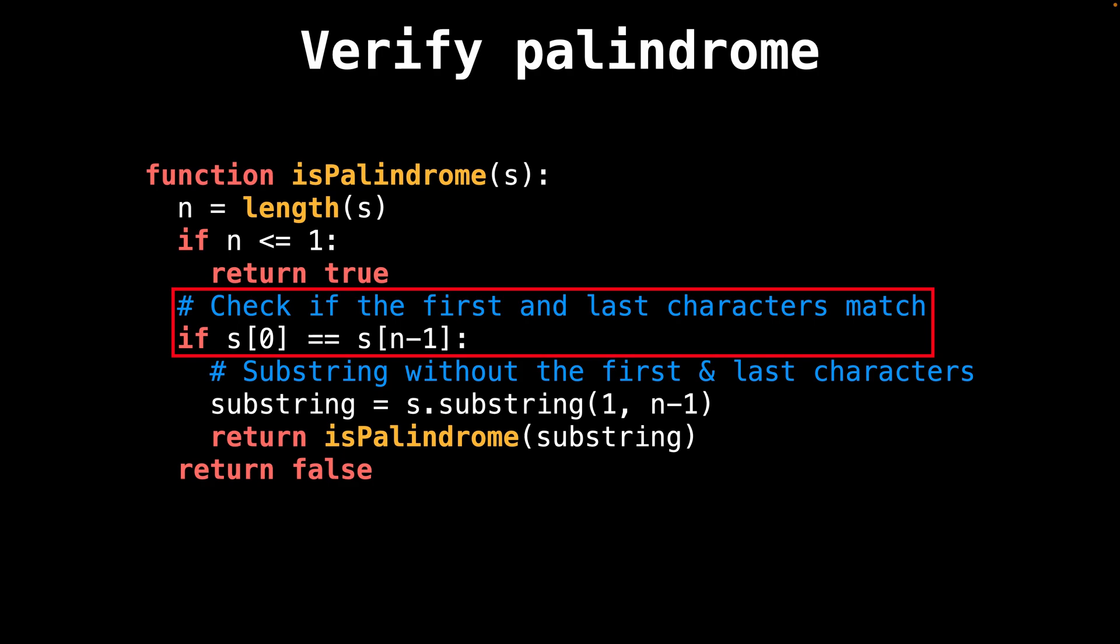Then we check if the first and the last characters match. If they do, then recursively call the is palindrome method to check if the inner substring not including the first and the last characters is also a palindrome.